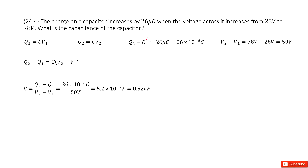The given quantities tell us the charge increased by 26 microcoulombs, so q2 minus q1 equals 26 microcoulombs. And the potential difference increased from 28 volts to 78 volts, so it increased by 50 volts.